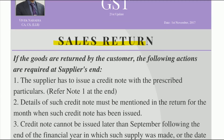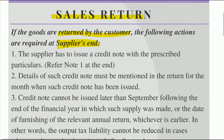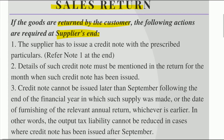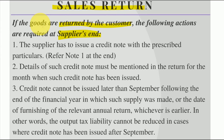If the goods are returned by the customer, the following actions are required at the supplier's end. The supplier has sold the goods to the customer, but the customer has returned all or part of the goods to the supplier. So what actions are required to be done by the supplier? First point: the supplier has to issue a credit note with the prescribed particulars.